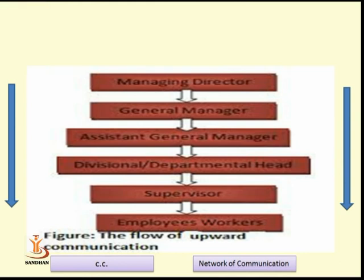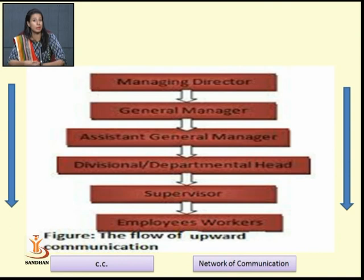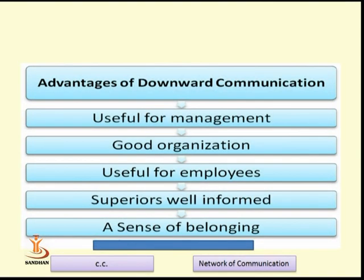Let us understand the organizational hierarchy diagram for downward communication. The flow goes: Managing Director → General Manager → Assistant General Manager → Departmental Head → Supervisor → Employees and Workers. We can see through the arrows that communication flows from the Managing Director down to General Managers, and from Supervisors down to Employee Workers. This is an example of downward communication.